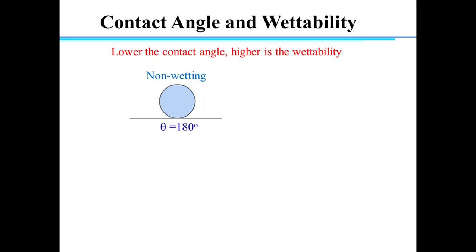Whereas in another situation, we can also have a drop spread out completely and cover the surface. In this case, contact angle is 0 degrees and this would be perfect wetting or complete wetting.